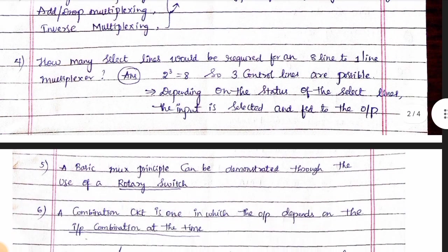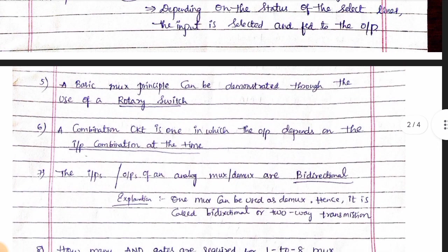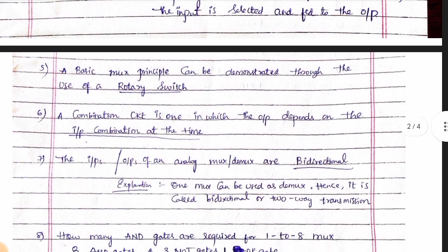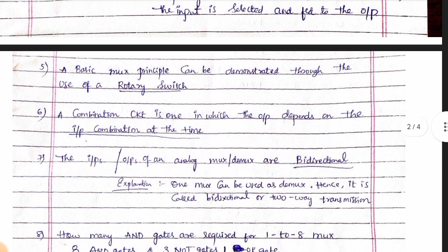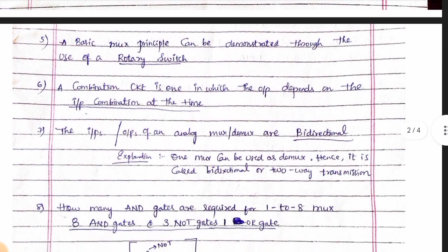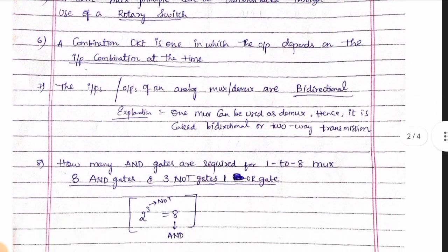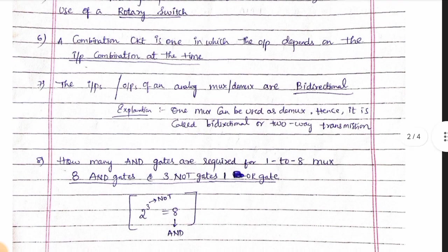The basic mux principle can be demonstrated through the use of a rotary switch. A combination circuit is one which depends upon the input combination at the time. Mux can also be bidirectional.